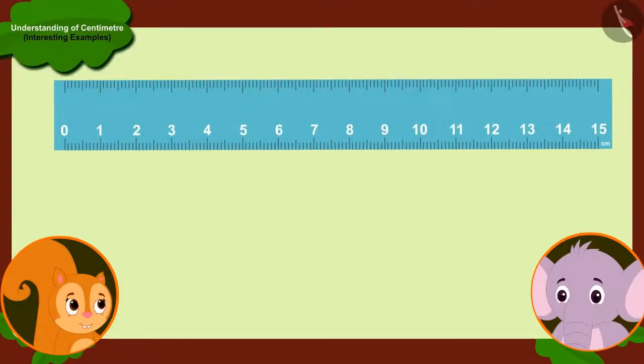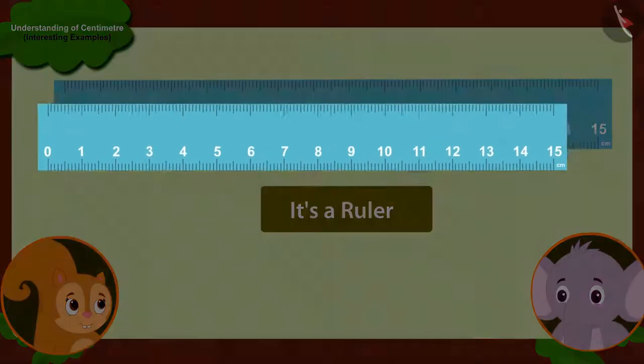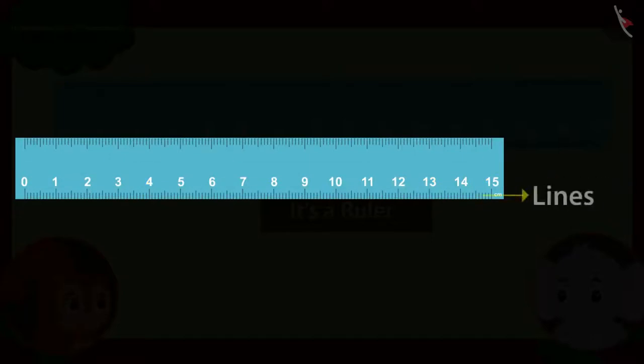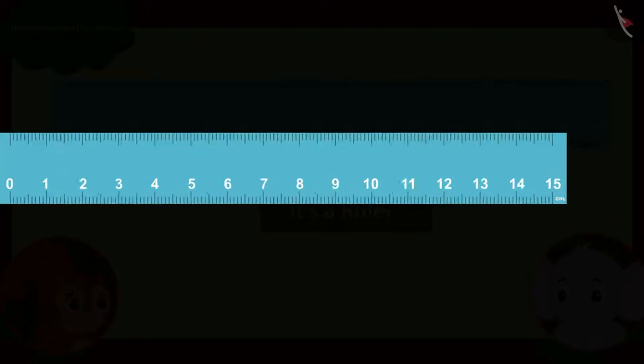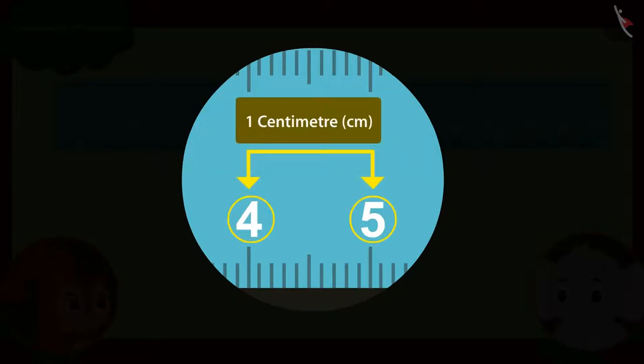Appu starts telling Chanda, this is a ruler. Can you see the numbers written and these lines drawn on it? The difference between any two consecutive numbers written on it is equal to one centimeter.